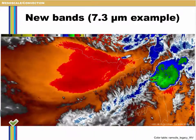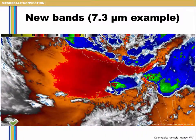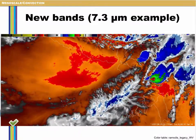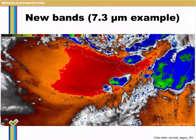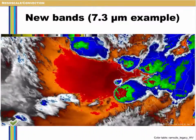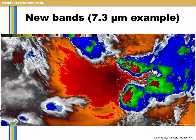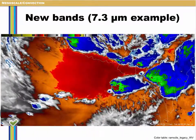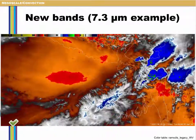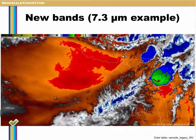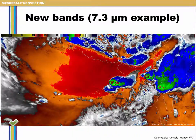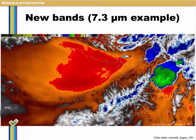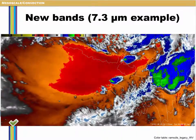A thunderstorm develops along the dry line and intensifies rapidly. The feature that develops on the western flank of the storm of interest is a combination of gravity waves, outflow boundary, and compensating subsidence near a strong updraft region. GOES-R brings a variety of new capabilities that will allow you to either see features with much more clarity compared to current GOES, or even see things for the first time.